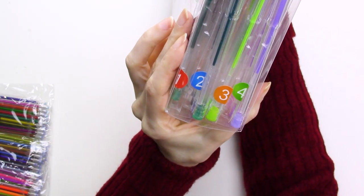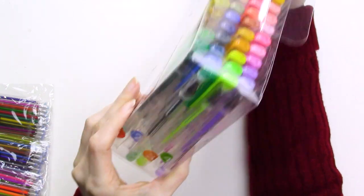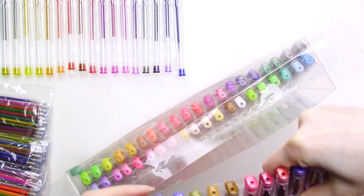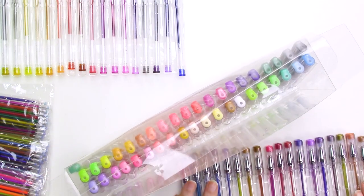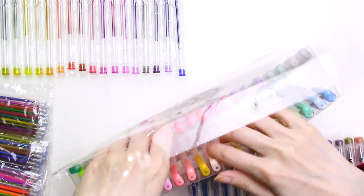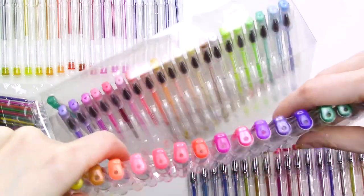When you open the package, the pens are in four different trays, which are labeled on the side with numbers 1 to 4. The package of refills also has numbered labels, which should make it easier to find the pen that goes with the correct refill when the time comes.